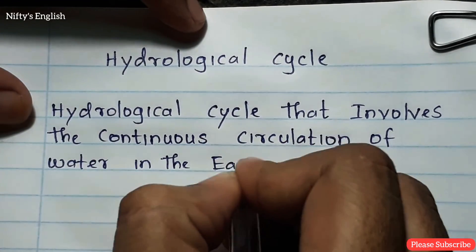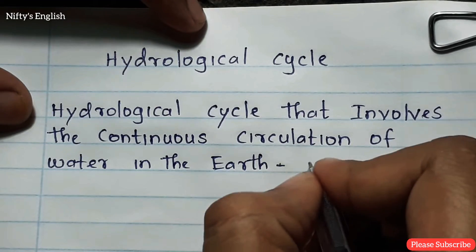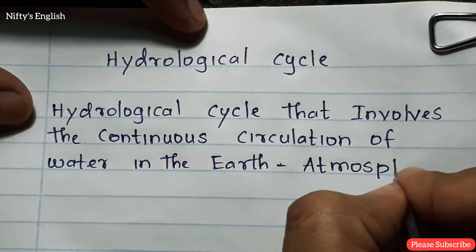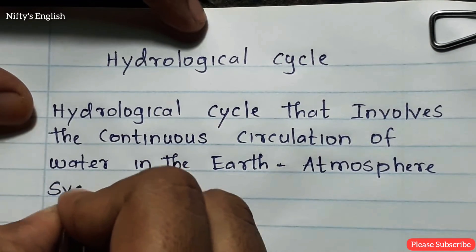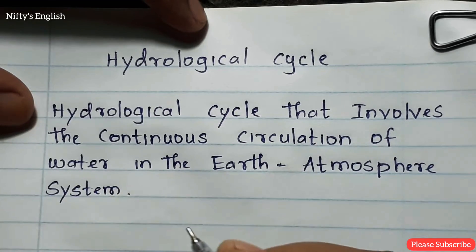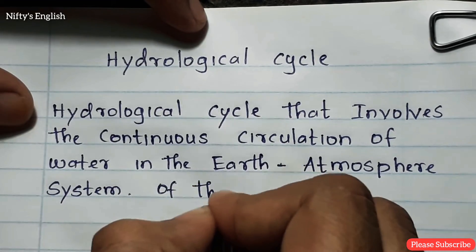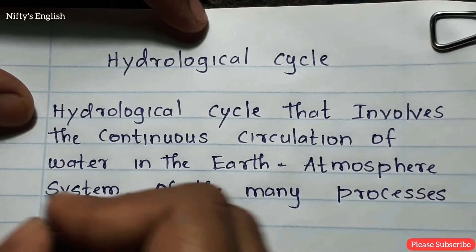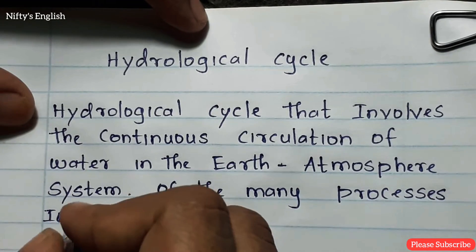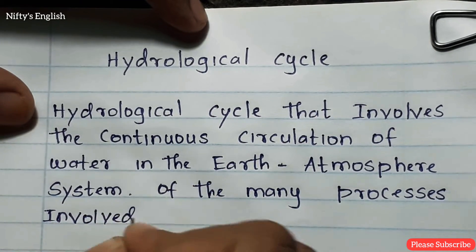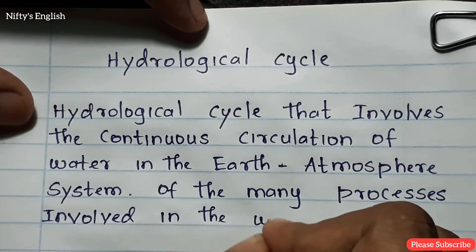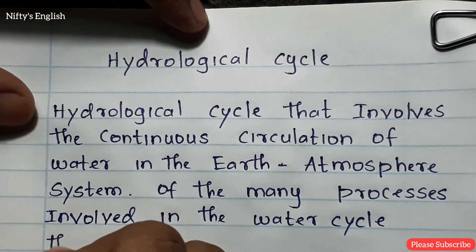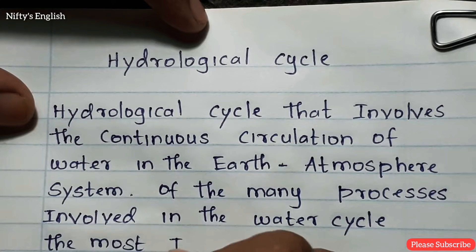The hydrological cycle involves the continuous circulation of water in the earth-atmosphere system. Of the many processes involved in the water cycle, the most important are: